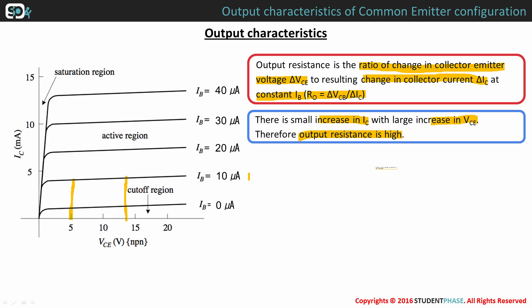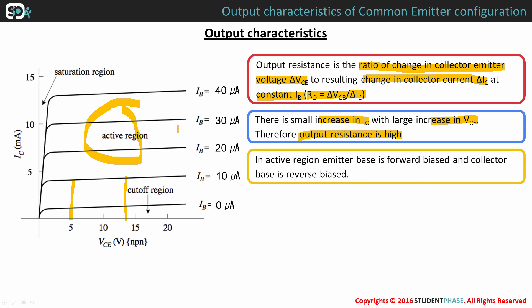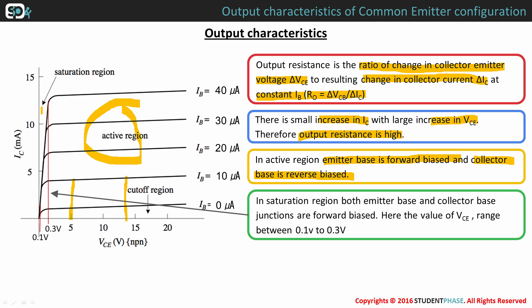In active region, emitter base is forward biased and collector base is reverse biased. In saturation region, both emitter base and collector base junctions are forward biased. Here, the value of collector emitter voltage VCE range between 0.1 volts to 0.3 volts.